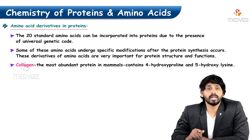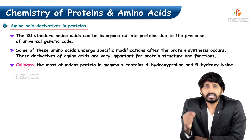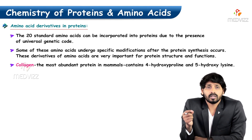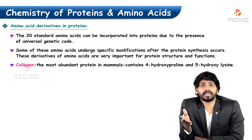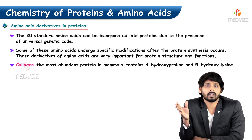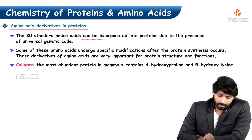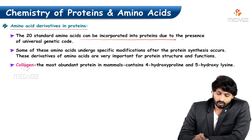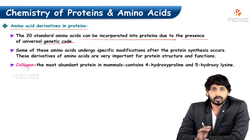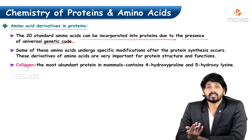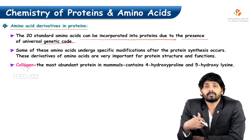Amino acid derivatives in proteins. We have mentioned that there are 20 amino acids in proteins, but there are a few amino acid derivatives which do exist in proteins. They can be incorporated in proteins due to the presence of the universal genetic code. But some amino acids undergo specific modifications after protein synthesis.